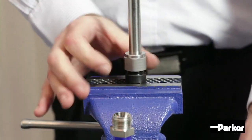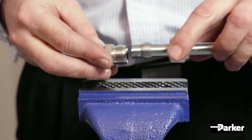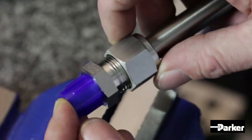Next, undo the nut, remove the pre-assembly from the tool and insert into the fitting body, ensuring the ferrules are fully seated into the fitting body cone.